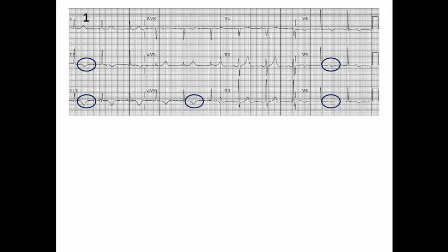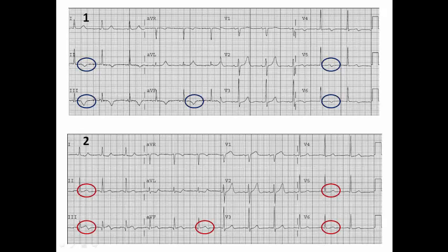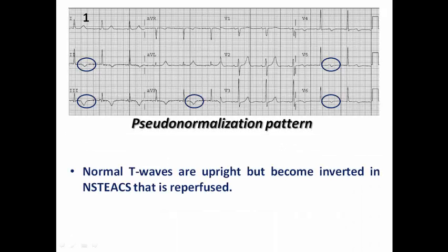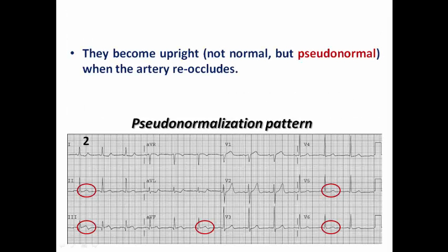Let's see this ECG example. The first ECG here is showing resting T wave inversion in the anterolateral leads. And then during chest pain the T wave became positive in the same leads — this is what we call pseudonormalization. Here the normal T waves were upright but they became inverted in this patient who had a history of non-ST elevation acute coronary syndrome that was reperfused, leaving evidence of baseline resting T wave inversion. Then when the patient developed chest pain these T waves became upright, seeming to be normal but it is pseudonormal.